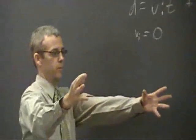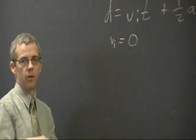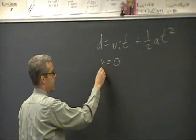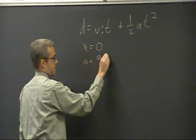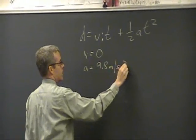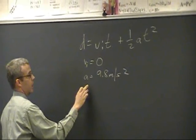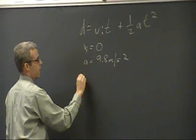VI is zero because we dropped it. Brother John just let go of it. He didn't throw it down. That would be a much more complicated problem. Then we know A was what? 9.8 meters per second squared. And we know the distance we're trying to find, and now we know T.